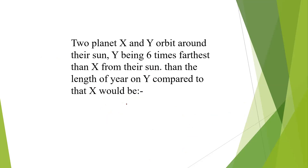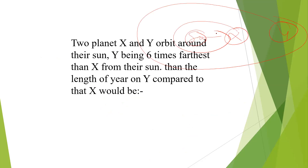Let's solve the planet question. We have two planets, X and Y, orbiting a sun. If the distance of X from the sun is r, then Y's distance is 6r. Using Kepler's third law: T² is directly proportional to r³, so T² equals constant A times r³.